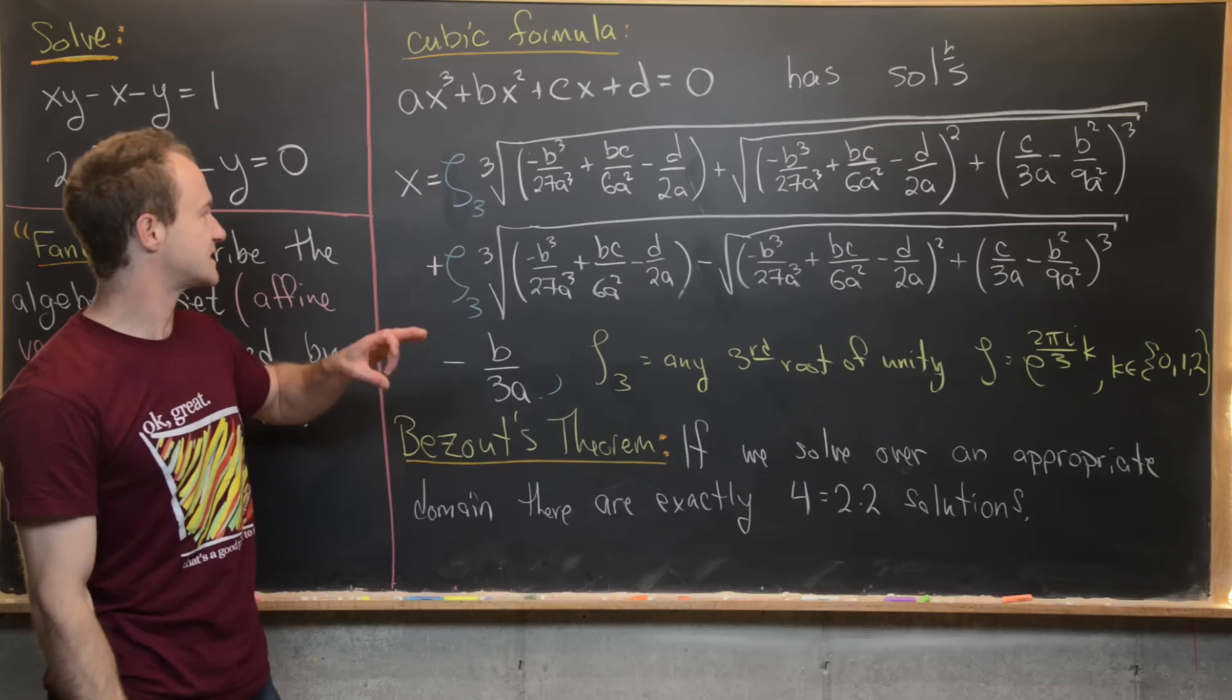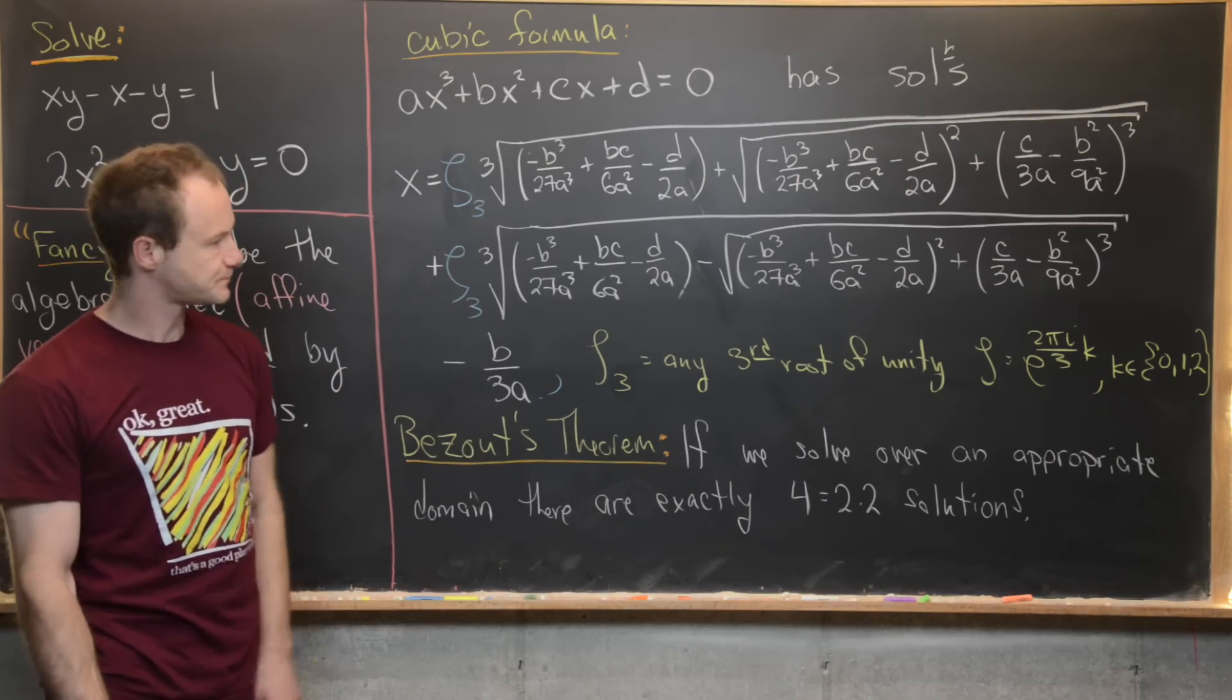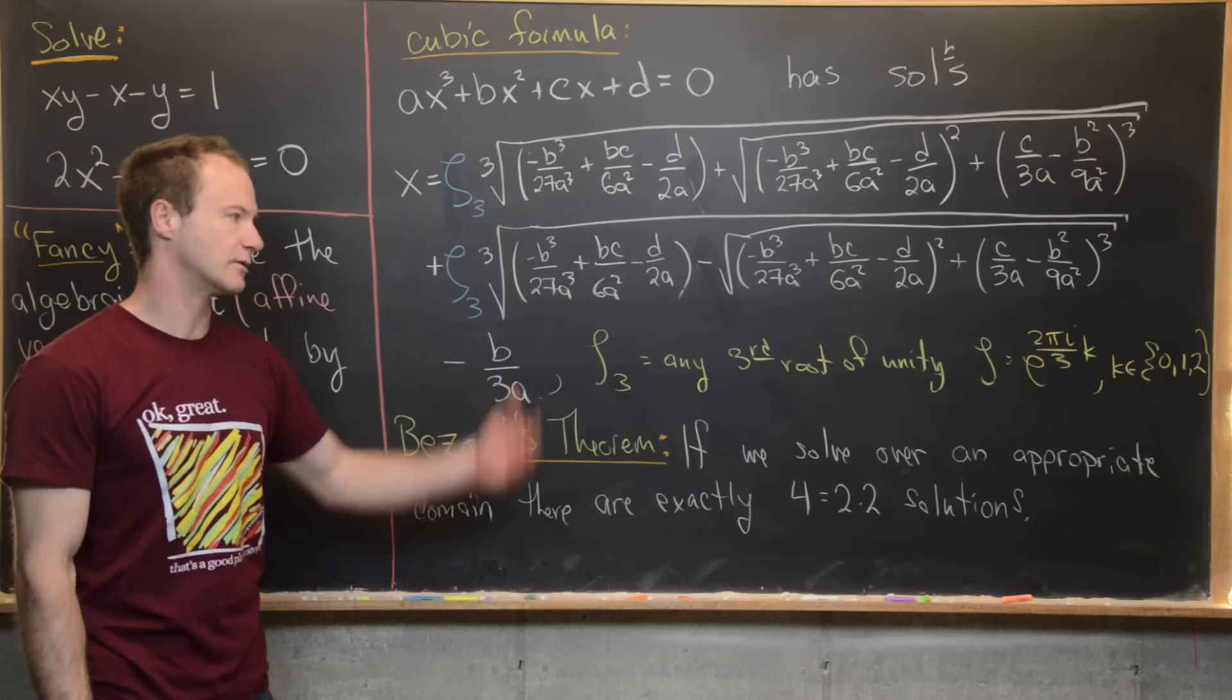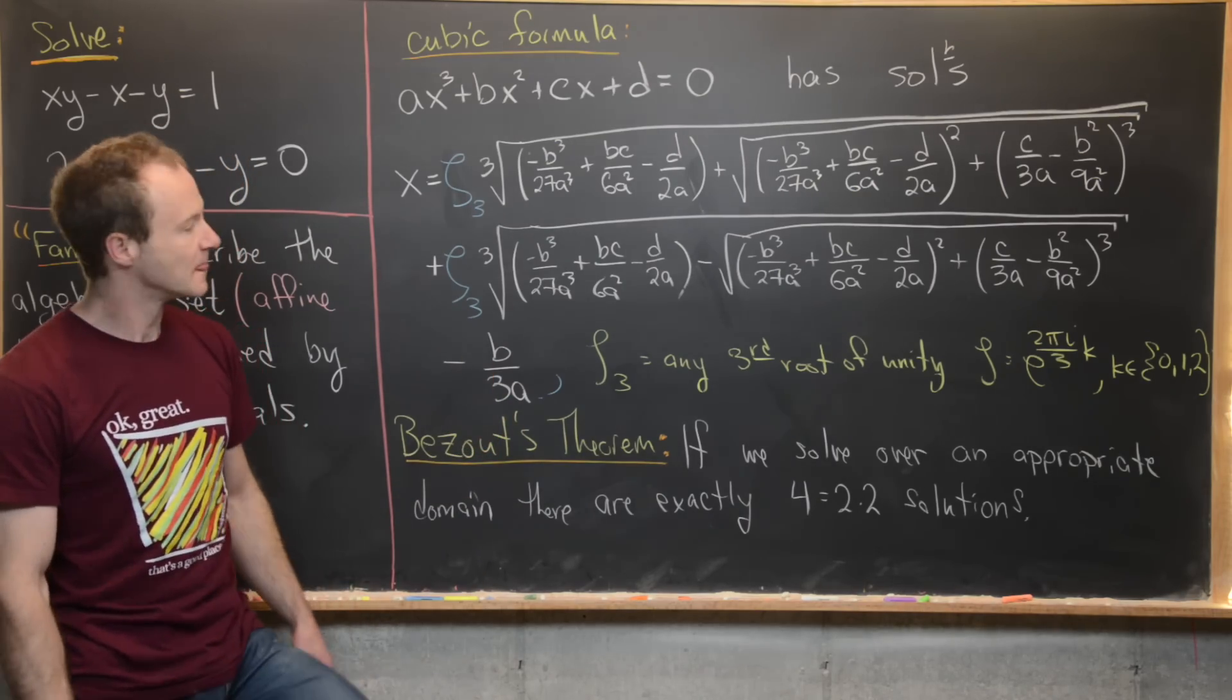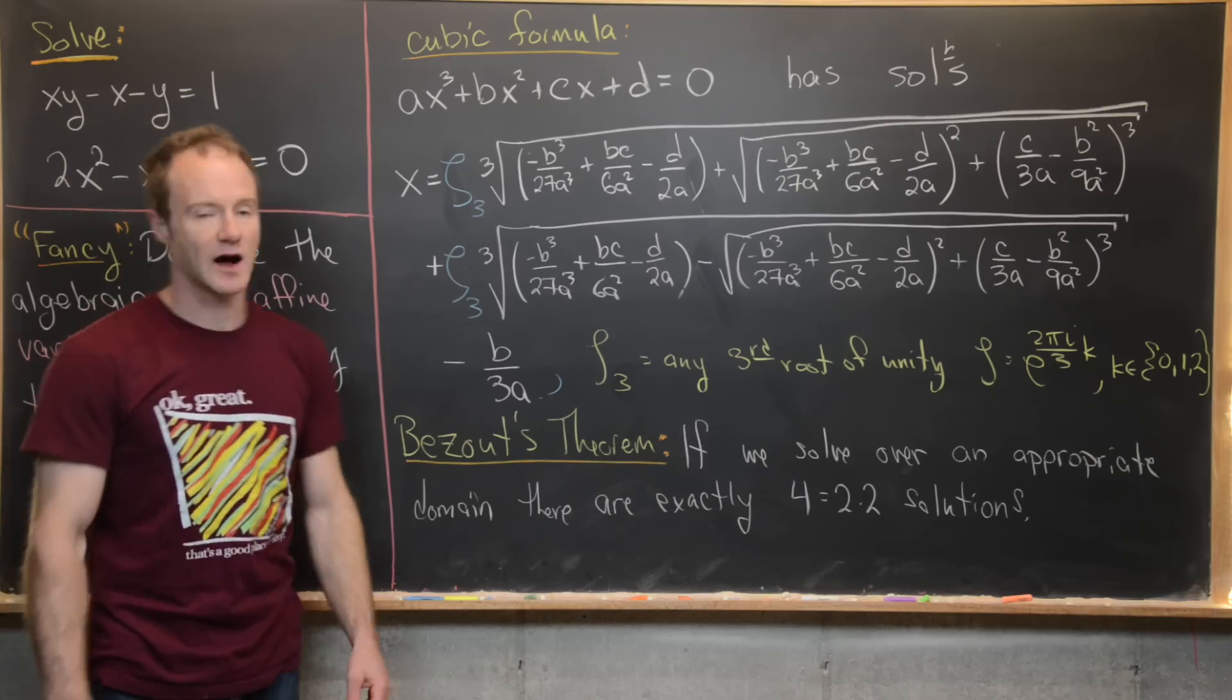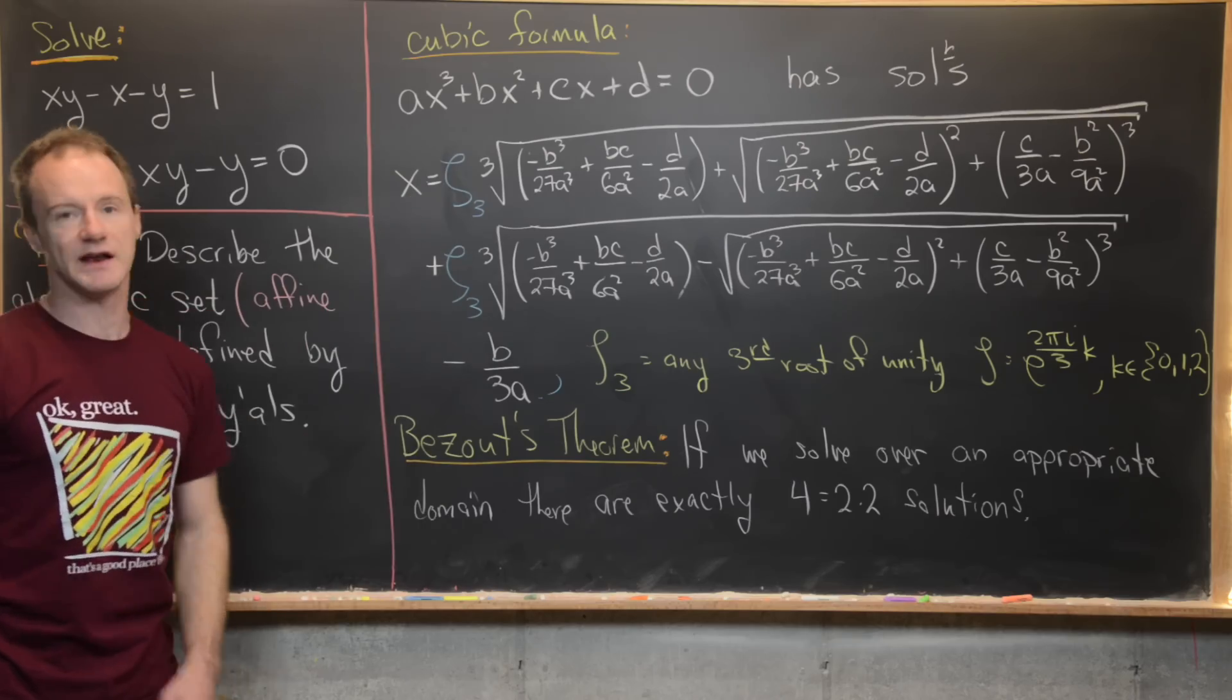So if k equals 0 then this ζ is equal to just 1. And then if k is equal to 1 well it's e^(2πi/3). And then well you can see what it is for the other case as well. So that's how you would get all of your complex solutions by including a cube root of unity right here.